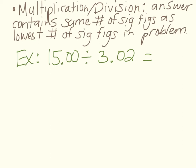The next rule is about multiplying or dividing, which is the rule we're going to be following the most in this class. When you're multiplying or dividing, your answer needs to contain the same number of significant figures as the lowest number of significant figures in your problem. So again, just find your answer and then round if you need to. In this problem, we have 15.00 divided by 3.02.